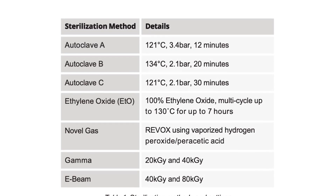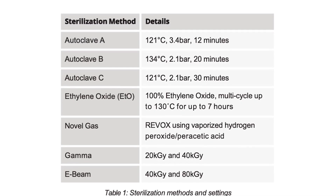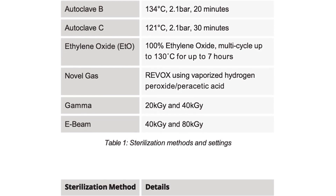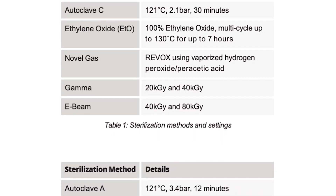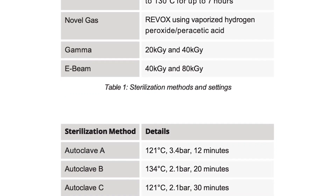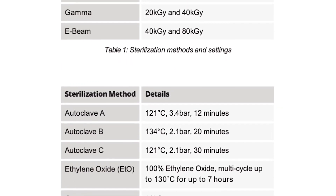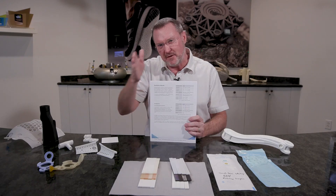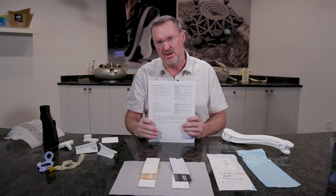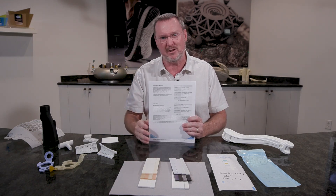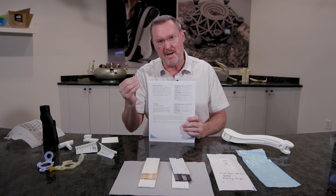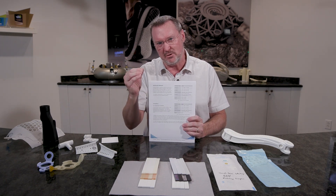When we look at those sterilization methods, we tried to span across not just autoclave, but also ETO, gamma, EV, and novel gas — looking at vaporized peracetic acid — a lot of different types of sterilizations because there are a lot of different types of medical applications. We want to be sure that we provide as many options as possible so that you can look at these applications.